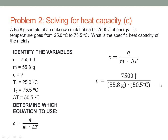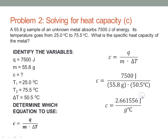Remember, the definition of specific heat capacity is how much energy in joules per gram degree C, so it has a complex unit. Plugging into the calculator: 7500 divided by 55.8 and then divided by 50.5 — you have to divide twice because both numbers are in the denominator. We get C equal to 2.661556 joules per gram degree C.